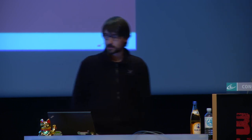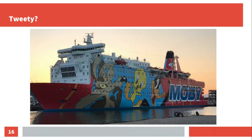In response, a massive number of mirrors appeared in the next days — over 100 for sure. One mirror was also done in the Tor network. There were some funny names like GuardiaCivil.sexy — where Guardia Civil is a federal police corps that was intervening in the Catalan referendum — and Piolin.cat, where Piolin is Catalan for Tweety, the small yellow cartoon chicken. The reason for that name was that one of the boats where police officers slept was named Piolin. It was really a joke on social media.